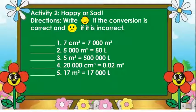For activity 2, we have happy or sad. Directions: Write the happy face if the conversion is correct, and put the sad face if it is incorrect.